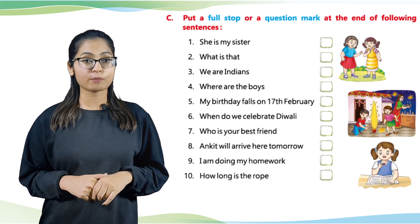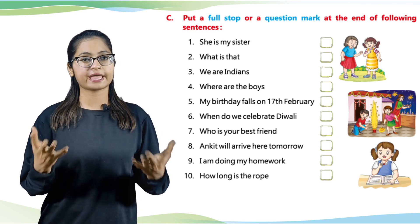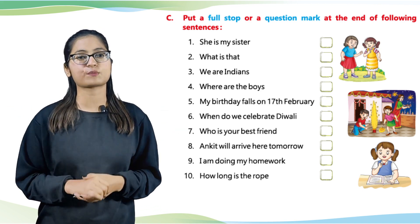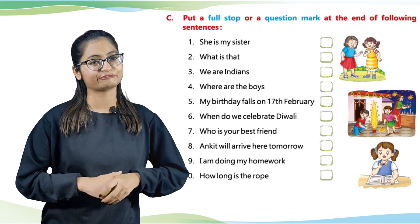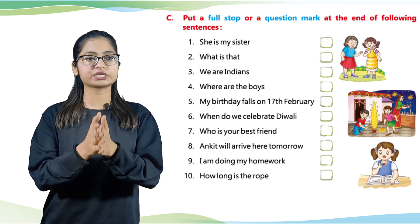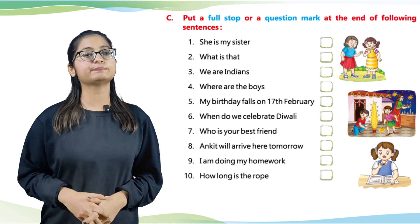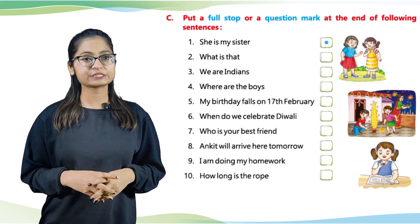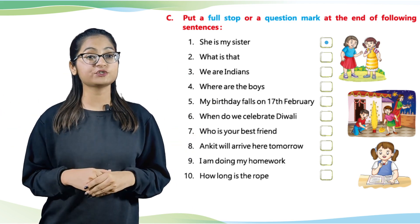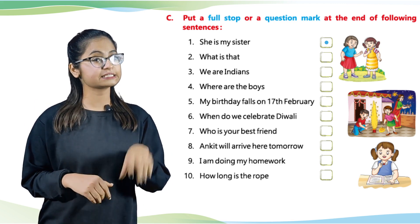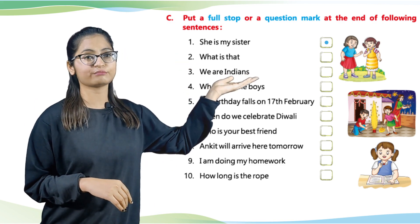Now it's time to do Part C: Put a full stop or a question mark at the end of the following sentences. Number 1: She is my sister. We will put a full stop because it's not a question. Number 2: It's not a question sentence, so a full stop. Number 3: What is that? This is a question, so we will put a question mark.